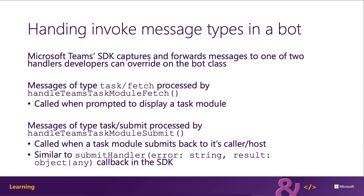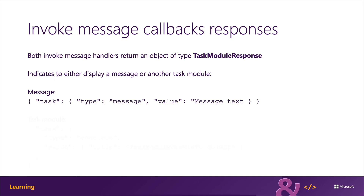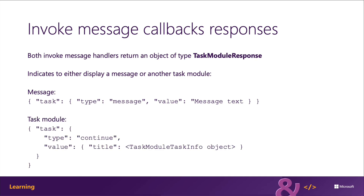Either handleTeamsTaskModuleFetch is called when the value.type property of the message is task/fetch, or handleTeamsTaskModuleSubmit is called when the value type property is task/submit. Both of these methods return an object of type TaskModuleResponse. This object tells Microsoft Teams to either display a message, which is type: message, or to display another task module. The details of the response are included in the value property of the returned object.